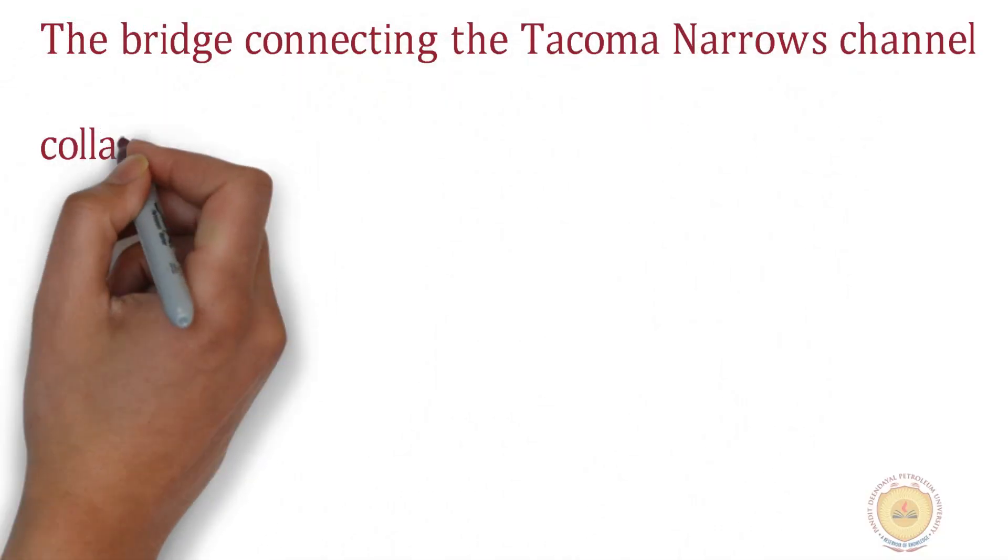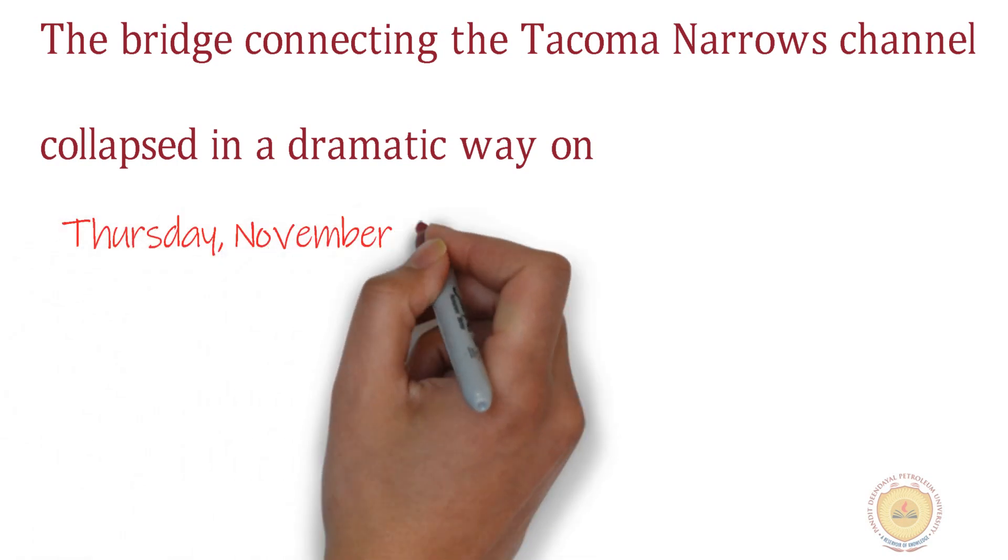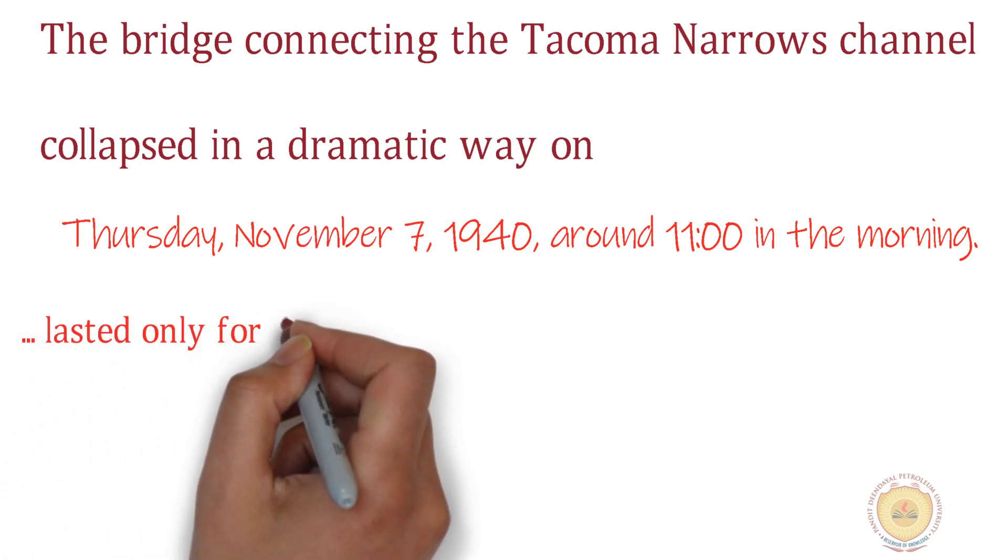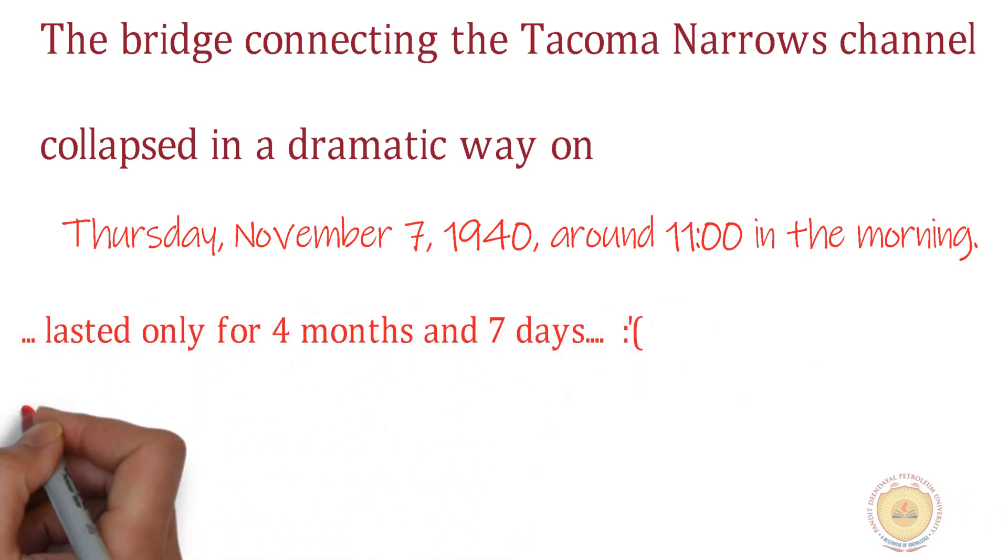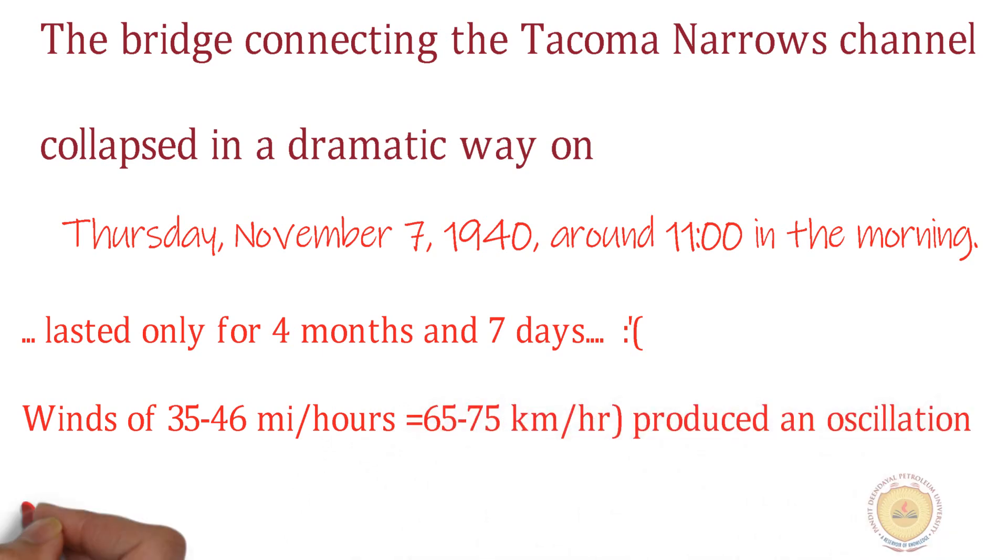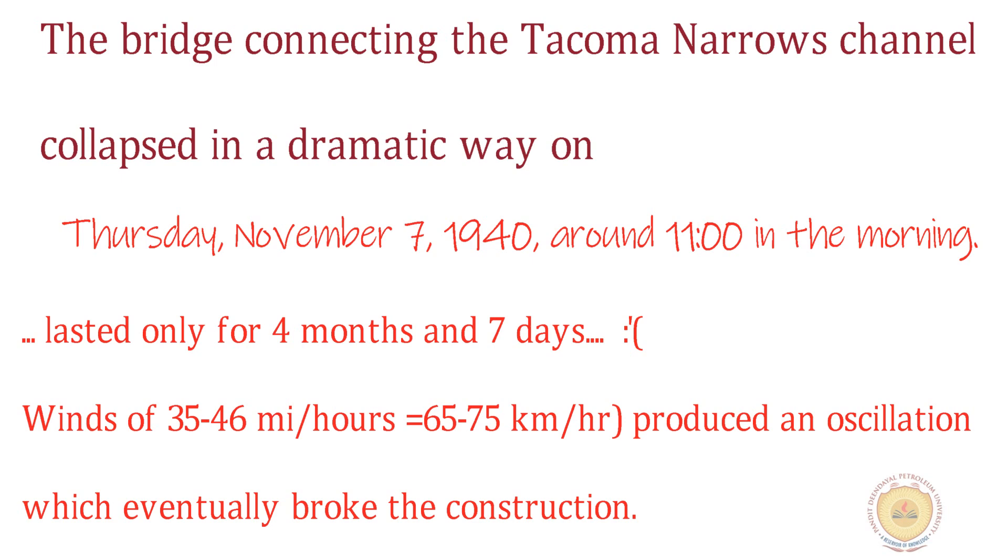The bridge connecting the Tacoma Narrows channel collapsed in a dramatic way on Thursday, November 7, 1940 around 11 in the morning. It lasted only for four months and seven days. Winds of 65 to 75 km per hour produced an oscillation which eventually broke the construction.